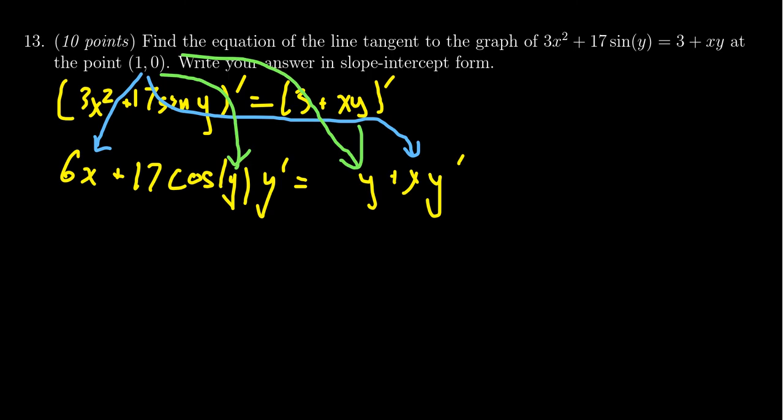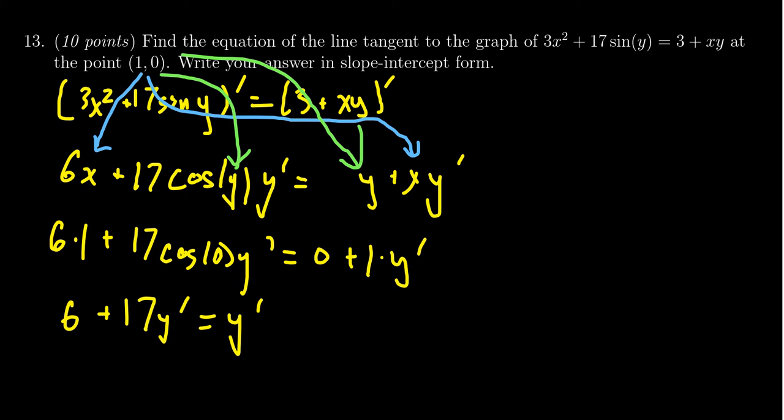With those simplifications, we're going to get 6(1) + 17cos(0)y' = 0 + 1(y'). That simplifies things dramatically. 6 times 1 is 6. Cosine of 0 is 1, so you get 6 + 17y' = y'. We need to solve for y' here. Subtract 17y' from both sides, giving us 6 = -16y'. Divide both sides by -16. We get dy/dx = 6/-16, which simplifies to -3/8. Don't panic if you get a fraction because slopes are generally fractions—rise over run. It's perfectly fine.